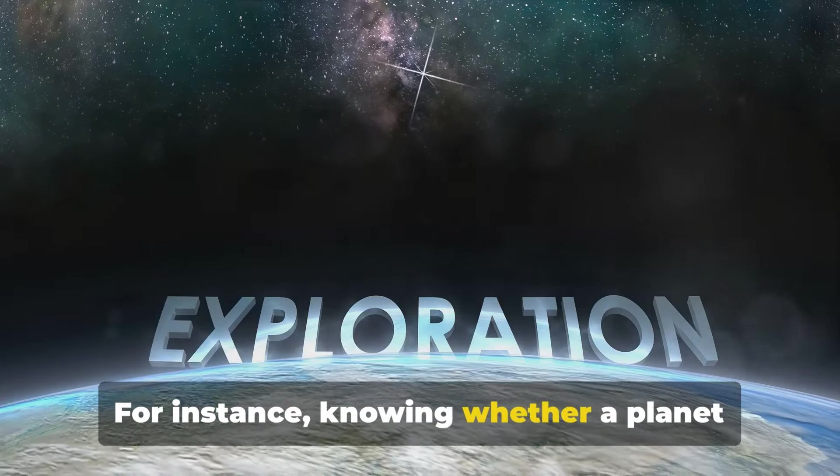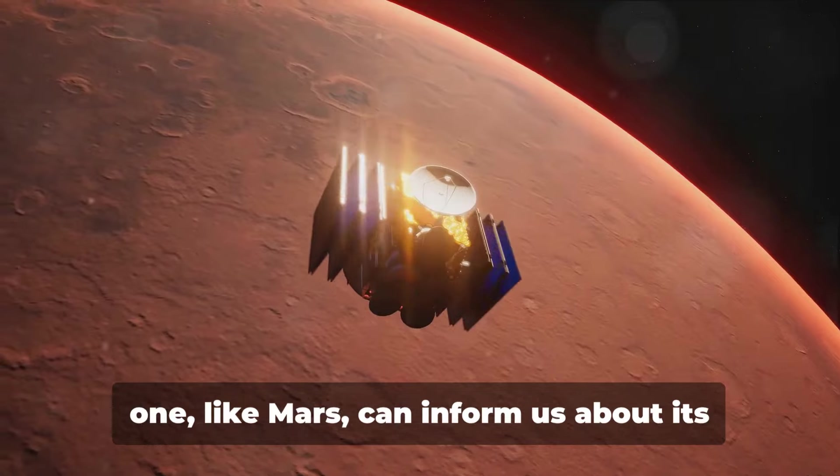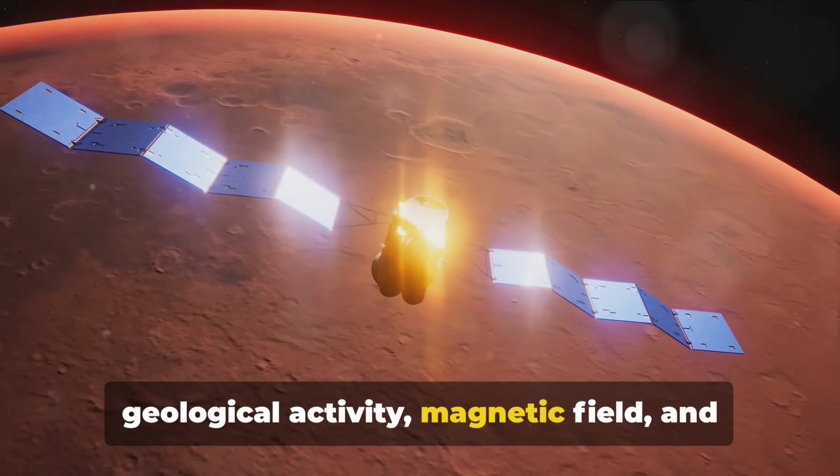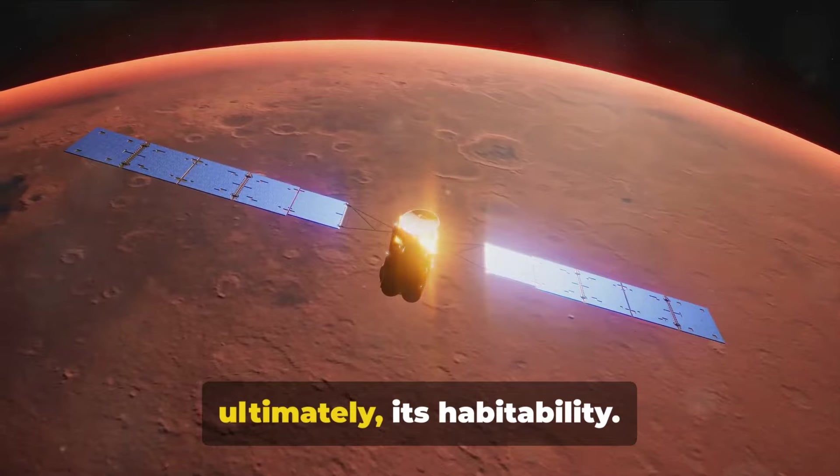For instance, knowing whether a planet has a molten core like Earth or a solid one like Mars can inform us about its geological activity, magnetic field, and ultimately, its habitability.